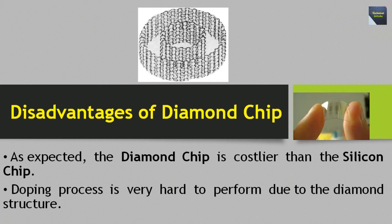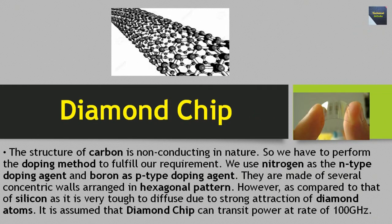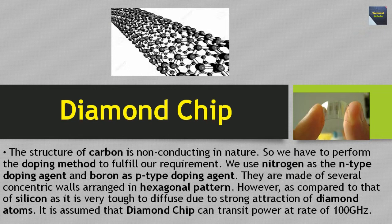Now we talk about some disadvantages of diamond chip. The diamond chip is costlier than the silicon chip. The doping process is very hard to perform due to the diamond structure. The structure of carbon is non-conducting in nature, so we have to perform the doping method to fulfill our requirements — we use nitrogen as the n-type doping agent and boron as the p-type doping agent. They are made of several concentric walls arranged in a hexagonal pattern. It is very tough to diffuse due to the strong atomic attraction of diamond atoms. It is assumed that diamond chip can transmit power at a rate of 100 GHz.